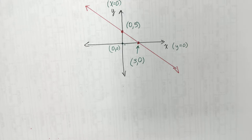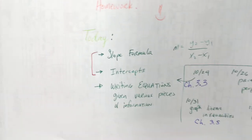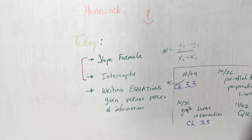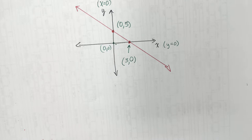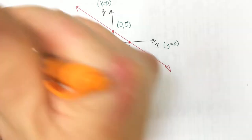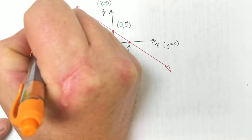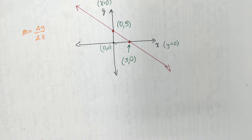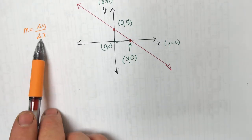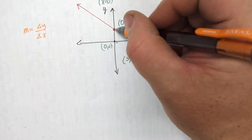I'm trying to teach you about intercepts — and at the same time, find this slope two ways. We're going to count the slope first. Slope is rise over run — the change in y in the numerator, the change in x in the denominator. y goes from zero up to five — that's a rise of five. x goes from zero to three — that's a run of three.